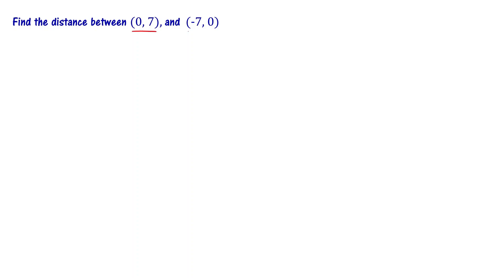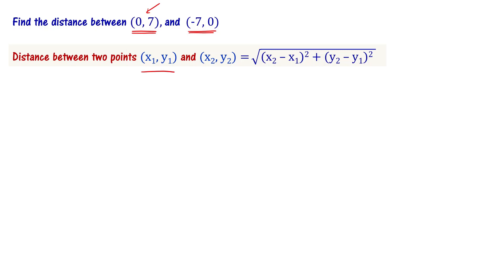Find the distance between point (0,7) and (-7,0). We have two points: the first point has coordinates (0,7), and the second point has coordinates (-7,0). We have to find the distance between these two points. The distance formula between two points (x1,y1) and (x2,y2) is equal to the square root of (x2 minus x1) whole square plus (y2 minus y1) whole square. Please note this formula — it is very important.